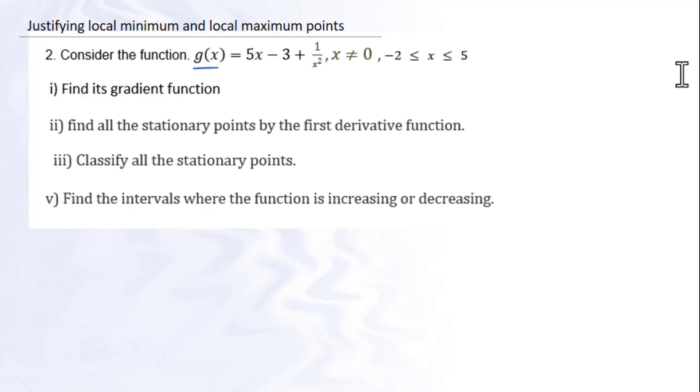Consider the function g equals 5x minus 3 plus 1 over x squared. x is not equal to 0, x greater than or equal to negative 2, less than or equal to 5. We do know x equals 0 is the vertical asymptote line.